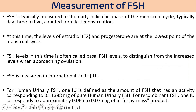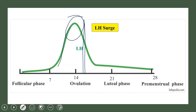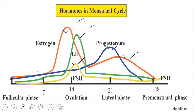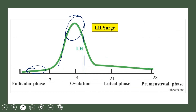FSH is typically measured in the early follicular phase of the menstrual cycle, on days 3 to 5 counted from the last menstrual cycle, when estradiol and progesterone are at their lowest. FSH level at this time is called the basal FSH level, to distinguish it from the elevated level approaching ovulation. FSH is measured in international units.